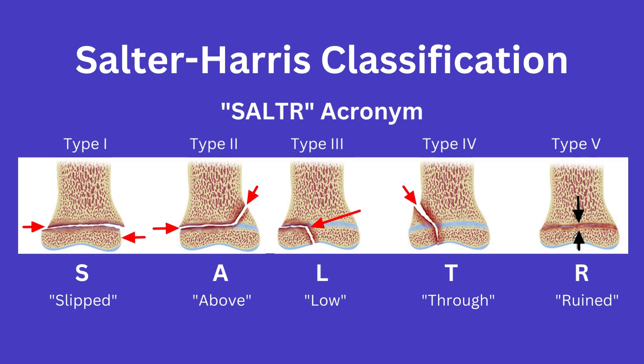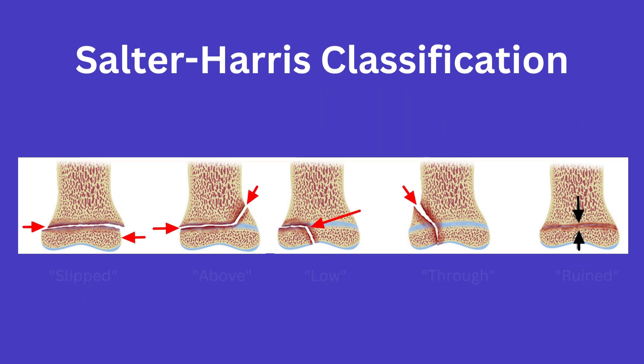Type 4 is the through fracture and involves a fracture line that extends both above and below the growth plate, involving the epiphysis and metaphysis. Lastly, type 5 is due to a compressive fracture of the growth plate — the so-called ruin type — as the growth plate is crushed, and is the most concerning of all of them.